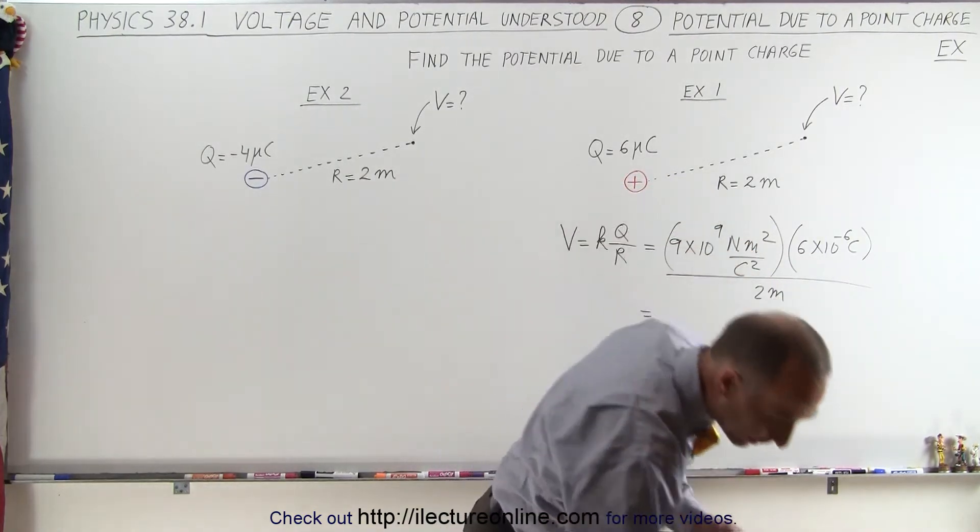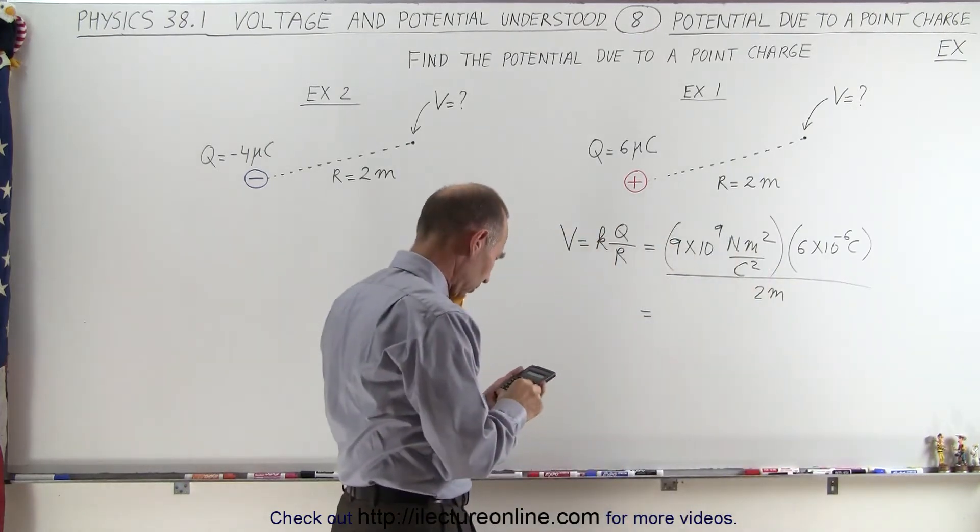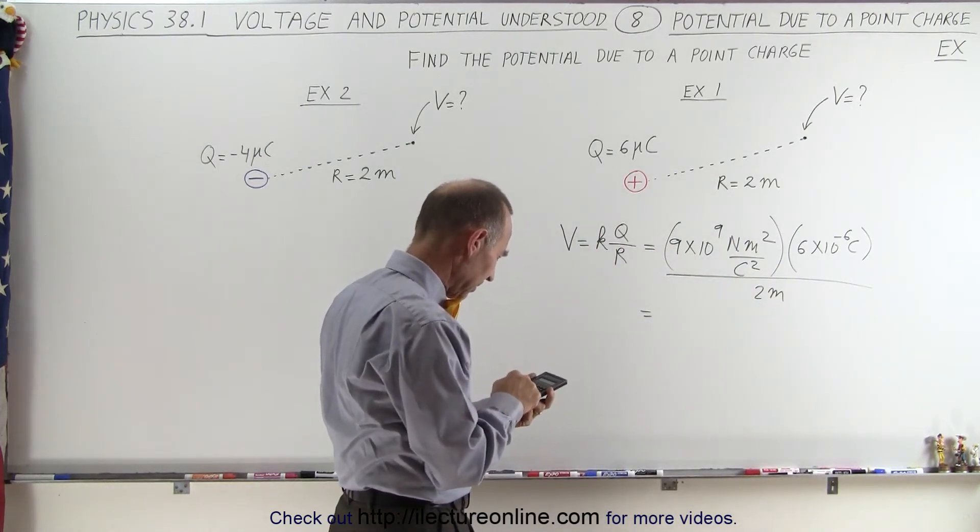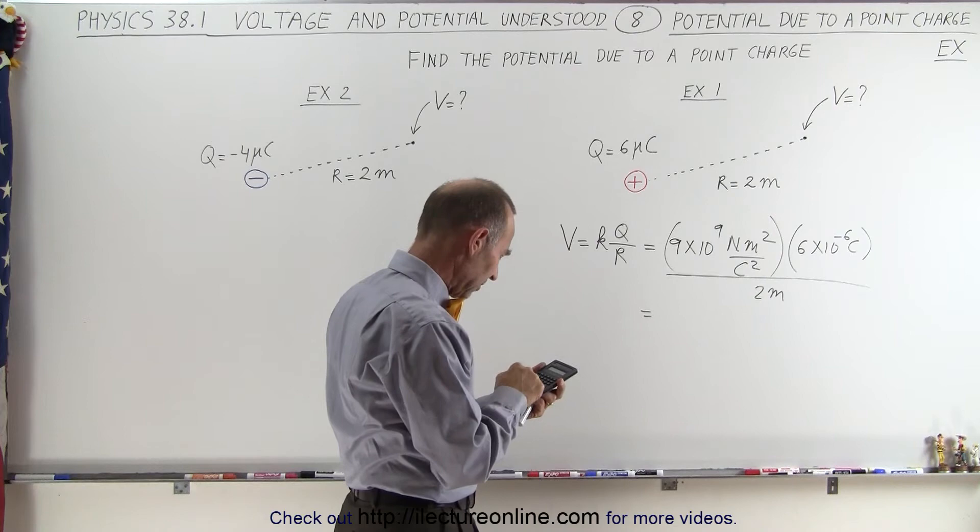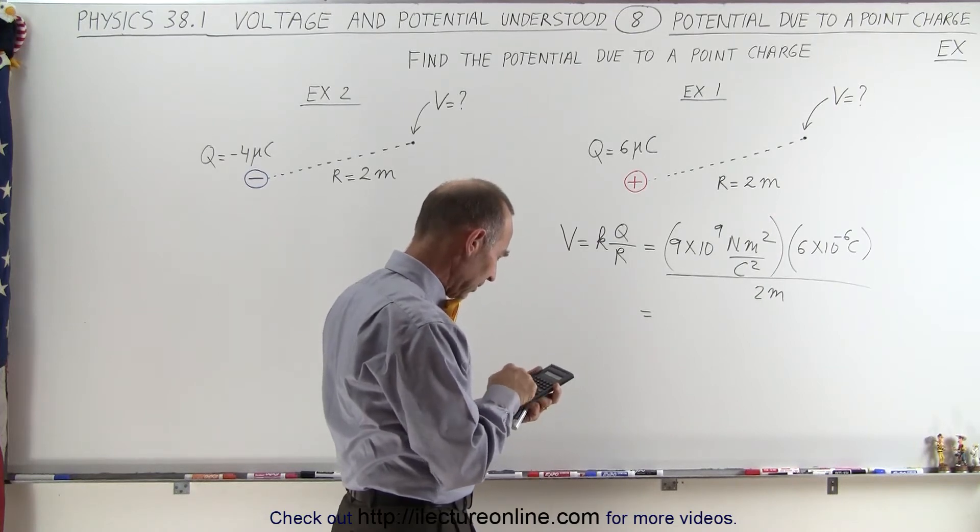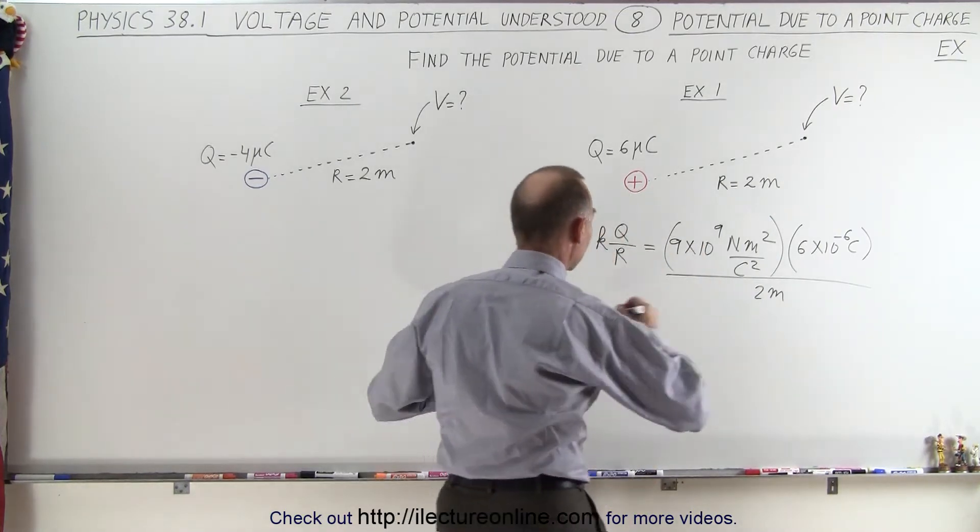So with the calculator, let's find out what that's equal to. So we get 9e to the 9th times 6e to the minus 6, divided by 2, that gives us 27,000.